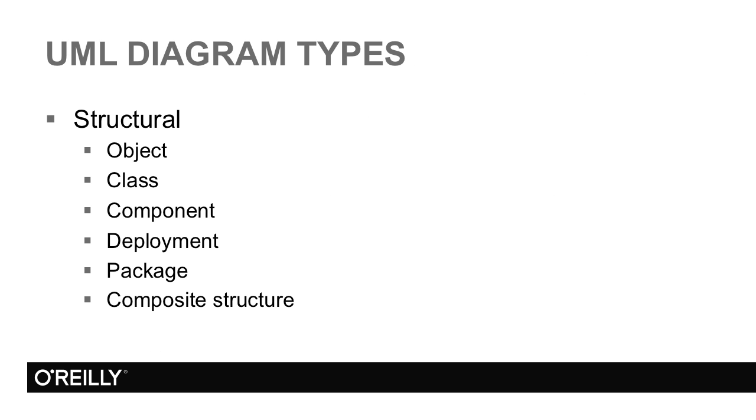I said that diagrams are views into the model that show different aspects of the model. UML distinguishes at a high level between structural and behavioral diagrams. The structural diagrams are object, class, component, deployment, package and composite structure. They all show static structural aspects of the system being modeled.